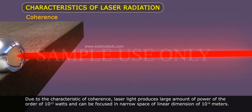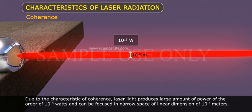Due to the characteristic of coherence, laser light produces large amounts of power on the order of 10^13 watts and can be focused in a narrow space of linear dimension of 10^-6 meters.